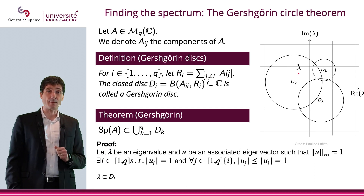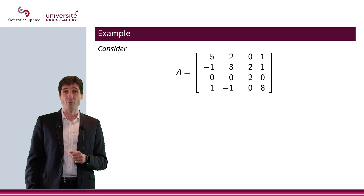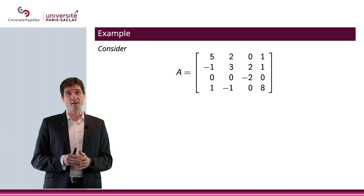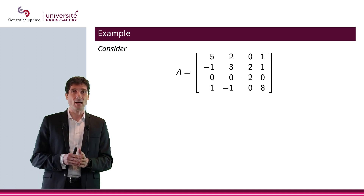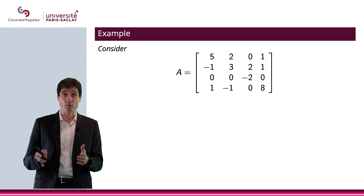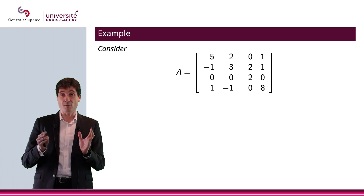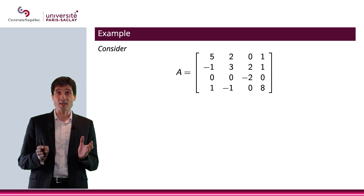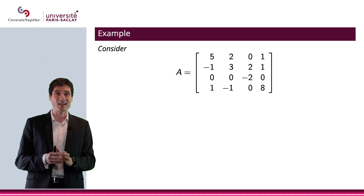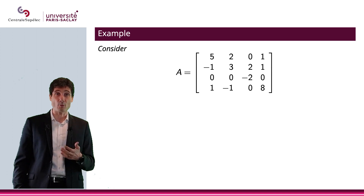Now let me give an example so we really understand how things work. I'm going to consider a 4×4 matrix. Obviously, for a 4×4 matrix I don't really need the Gershgorin circle theorem — I could just compute the determinant of (A − λI) or put it in triangular form. The reason we like this theorem is to apply it to large matrices. But I'll show you on this small example, so I apologize for that.